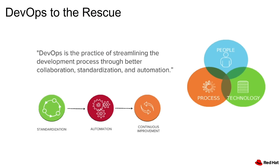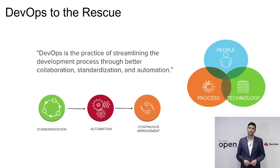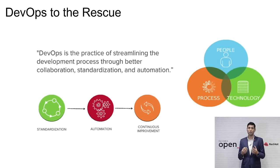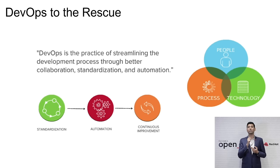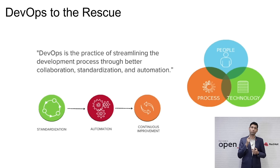The definition of DevOps I like most is: being able to do things simpler, faster, and in a repeatable manner. The core tenants are: first, that it's standardized — every time you run a process, you get the same output. Second, that it's automated — no manual intervention; you should be able to kick off a job to create a development environment or copy production without further human intervention. Third, there should be a process for continuous improvement — understanding where the process takes more time and where further automation can be added.